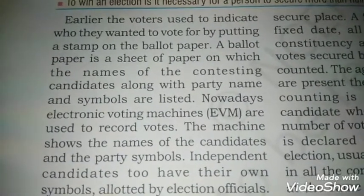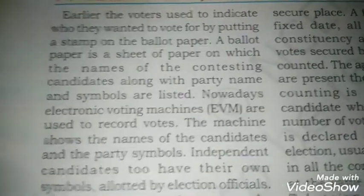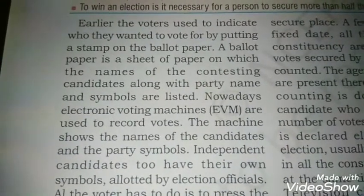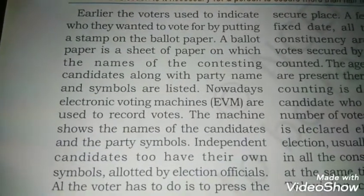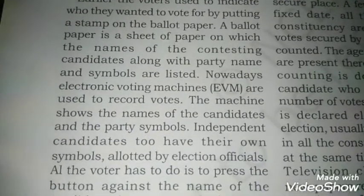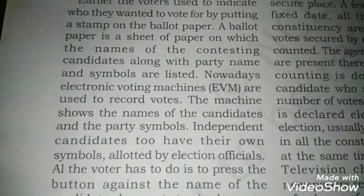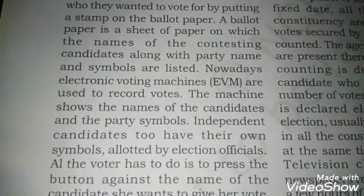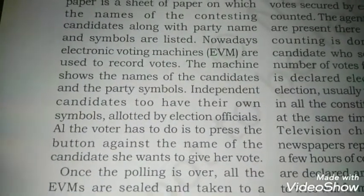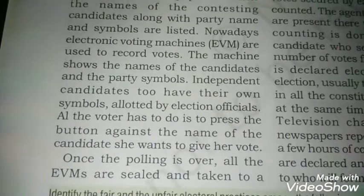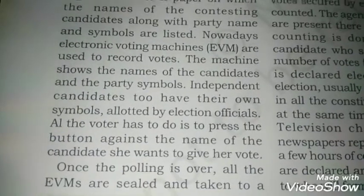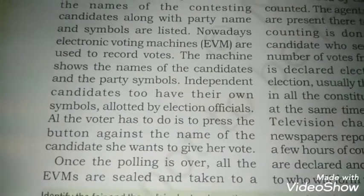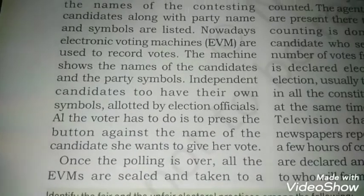Nowadays, Electronic Voting Machines (EVMs) are used to record votes. Aaj ke samay mein EVM use ki jati hai — yeh bahut hi accha instrument hai. Simply aap ek button dabayenge toh aapka vote secure ho jayega. The machine shows the names of candidates and party symbols. Independent candidates also have their own symbol allotted by the election officer. Voters simply press the button against the name of the candidate they want to vote for.